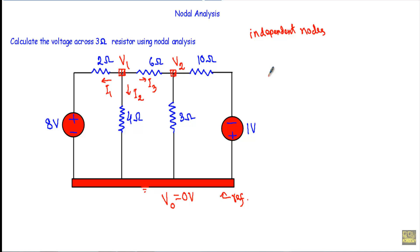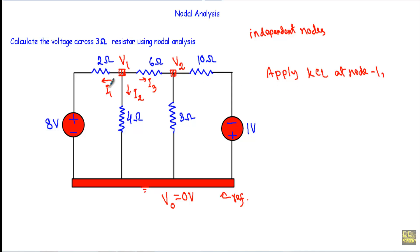Now applying KCL at node 1: the summation of incoming currents equals the summation of outgoing currents. The outgoing currents are I1, I2, and I3, so I will add them: I1 plus I2 plus I3. There is no incoming current, so the right side equals 0.